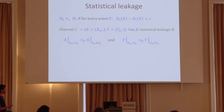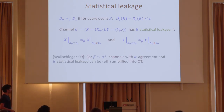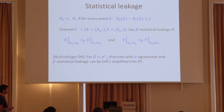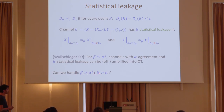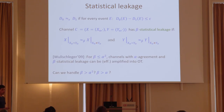We say the channel has beta statistical leakage if the statistical distance between the distribution of Alice's view when outputs are the same and when outputs are different is less than beta, and the same for Bob with respect to Y. We know Wullschleger showed that if the leakage is much smaller than the agreement — if beta is less than alpha squared — then a channel can be amplified into OT. But we don't know what happens when the leakage is larger than alpha squared, and this is not because we lack strong enough theorems — it's because statistical distance is not capturing some properties of this channel.